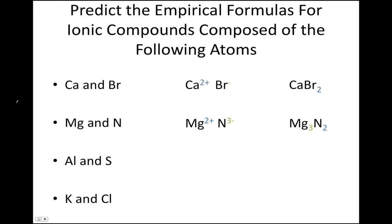You can double-check by making sure that the total positive and total negative charges cancel each other out. If we have three magnesium ions and they each have a charge of plus two, the total positive charge will be plus six. If we have two nitrogen ions and the charge on each is minus three, the total negative charge is minus six. Because the sum of positive and negative charges is zero, we know our compound is neutral with no net charge.